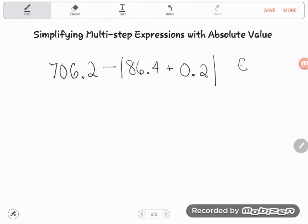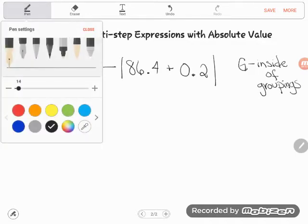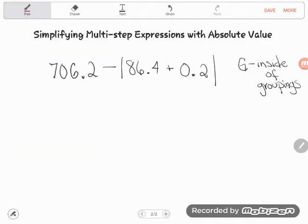So first step to the order of operations is always to work inside of groupings. Some people use the abbreviation P for parentheses. I use G inside of groupings. Parentheses are one type of grouping, but they're not the only type, and that's why I prefer a G, because we can use lots of things to group, and one of those things we can use are absolute value bars.